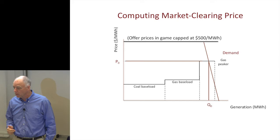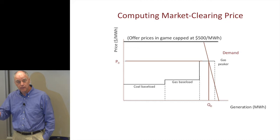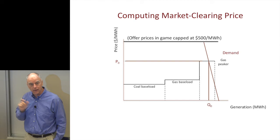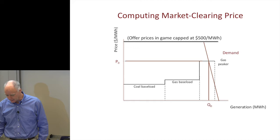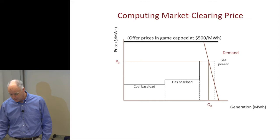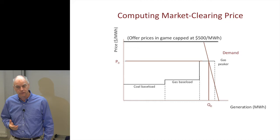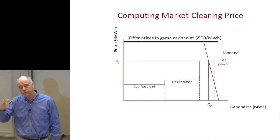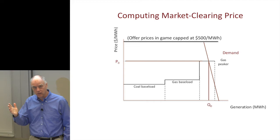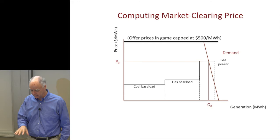Most markets also have an offer cap — a maximum offer price that suppliers can submit. In the game, it will be $500 per megawatt hour. In the real world, there are also offer caps. What this prevents is the so-called million-dollar bid — there can be times in the electricity market where a bid must be accepted, because if supply doesn't meet demand, the lights go out. Offer caps are one regulatory safeguard against this kind of extreme market power exercise.